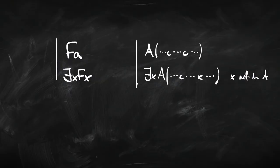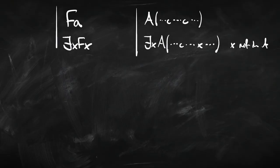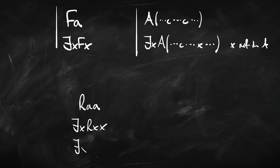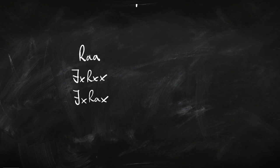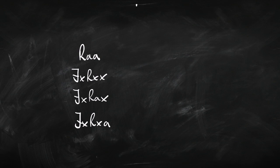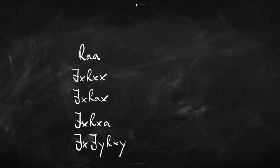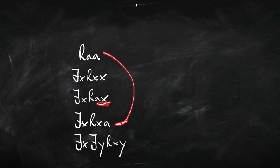So what we're saying in this notation is: replace some or all of the c's with x's. Why are we allowed to replace just some of them? Because we can reason like this — suppose that Anna likes herself, Raa. From that we can infer that someone likes themselves, but we can also infer that Anna likes someone, and we can also infer that someone likes Anna. We should be able to infer all of these things from the fact that Anna likes herself. So to make room for that, we have to allow replacing just some of the a's.